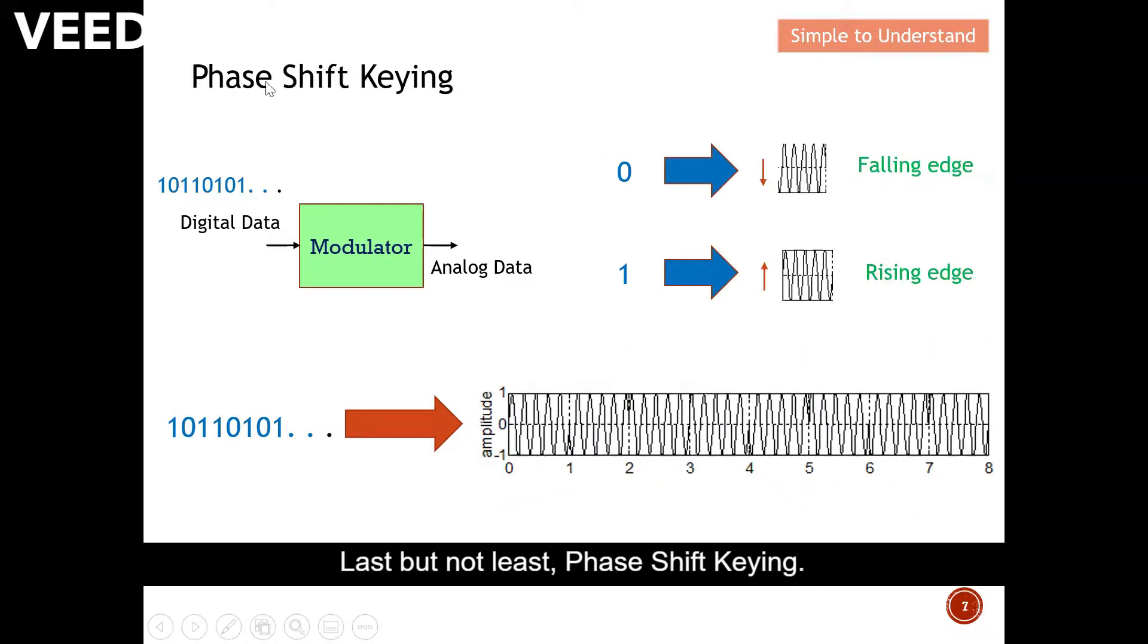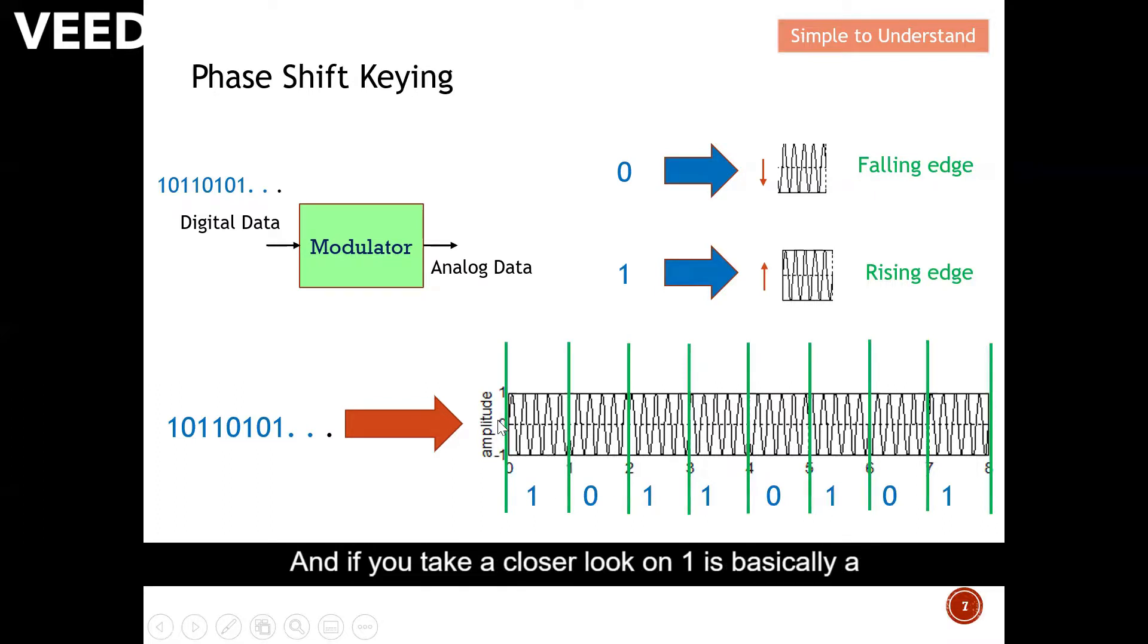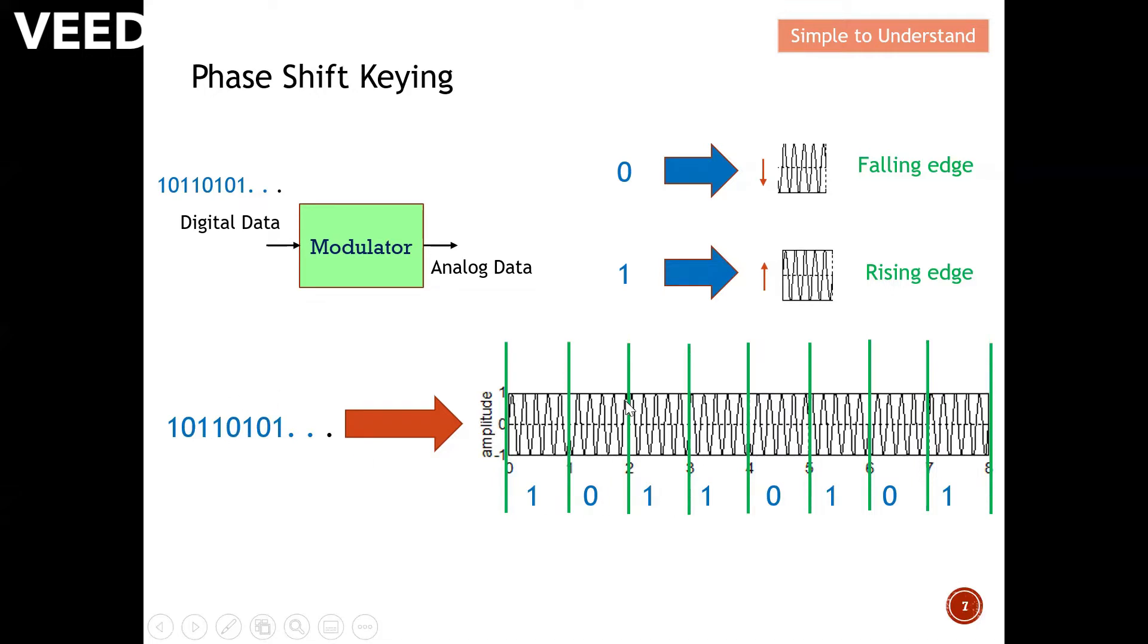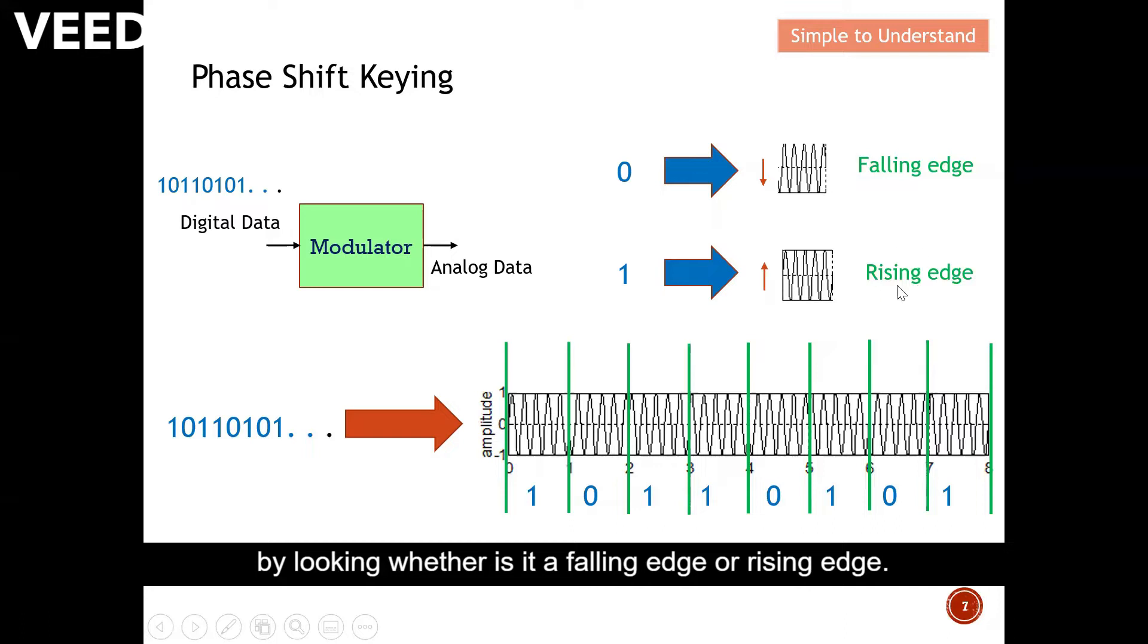Last but not least, phase shift keying. Again, this is a signal zero. I can, for example, at the edge, I can use a falling edge to represent a data that having a zero. And when the signal is one, I can represent by a leading edge of one, a rising edge. So basically, in short again, I can actually represent the data. And if you take a closer look, on one is basically a rising edge. On zero is a falling edge. On one here is a rising edge. And that's how I represent the data from digital into analog by looking whether is it a falling edge or a rising edge. So this method is called phase shift keying.